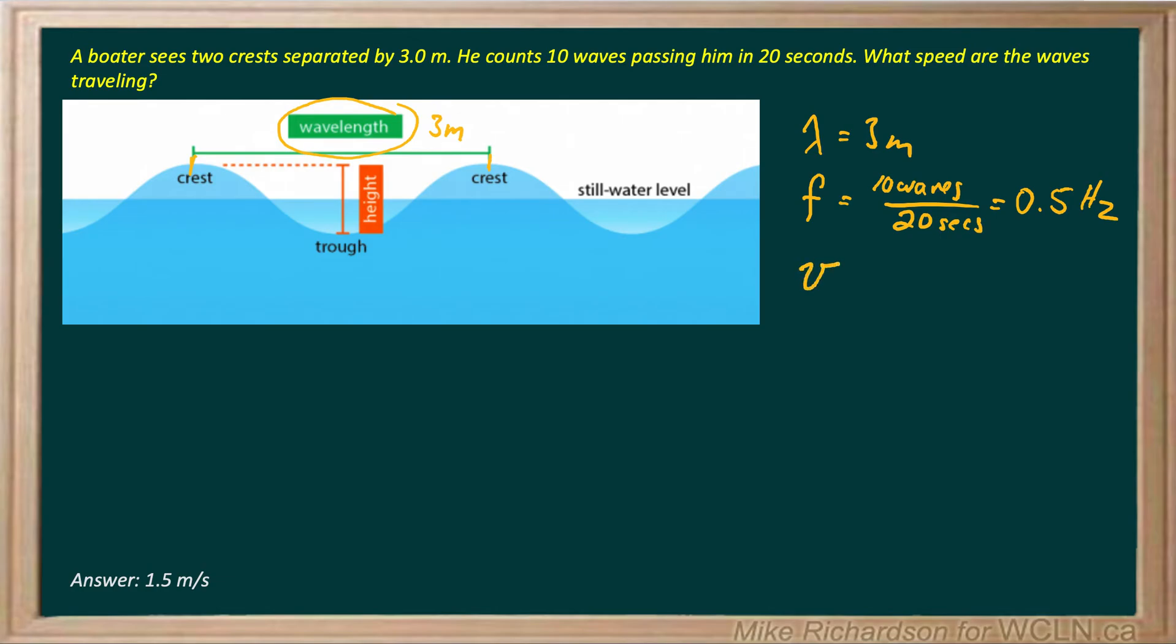And we're trying to find the speed. Now we have specifics of the wave, so we're going to use this version for our velocity. V is equal to F lambda. F is 0.5, and lambda is three meters. And half of three meters is 1.5 meters per second.